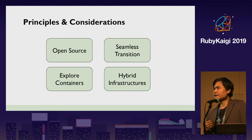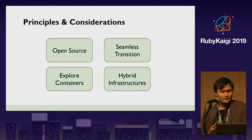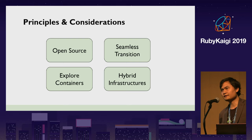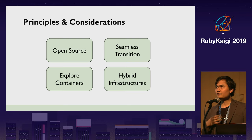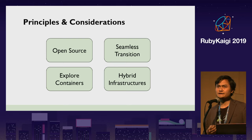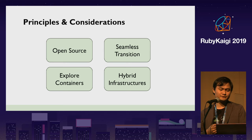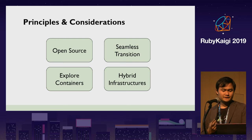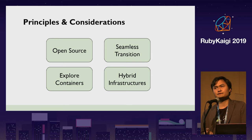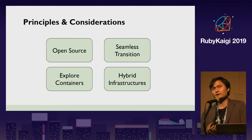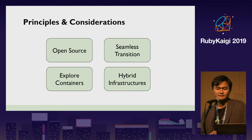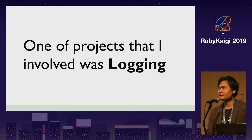We also have a requirement to support hybrid infrastructure. We cannot use the cloud for everything — one of our services, GoPay, is a payment platform and one of the most regulated industries. One of the requirements is that we need to host services in-country by ourselves, so we cannot use a cloud platform. That's why anything we build needs to support hybrid infrastructure. One project I was involved in was logging.